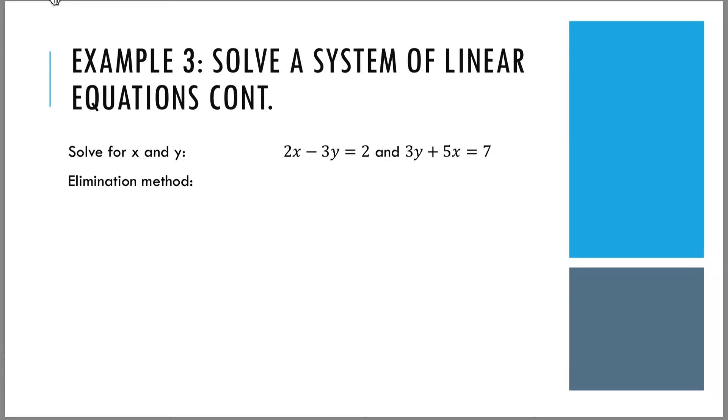I also want to do this example using the elimination method just to remind you that there are different ways to solve these types of equations. The elimination method works particularly well for this example. In order to use it, I'm going to rewrite the second equation, but I'm going to rearrange the terms so that the x term is in front. So 5x + 3y = 7. By doing this, we can see how the elimination method works.